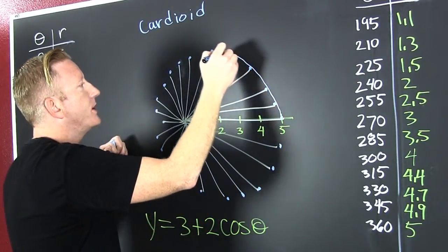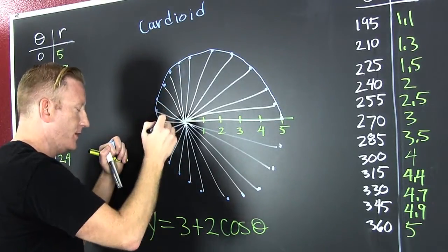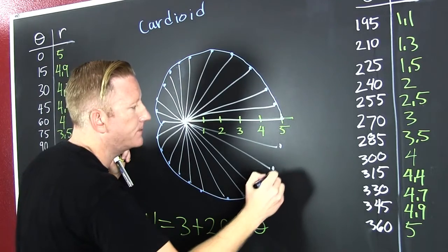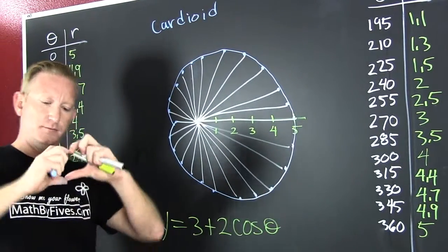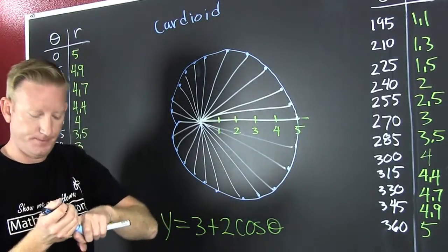So if we want to see what the graph of three plus two cosine theta is going to be, it's a heart, a cardioid.